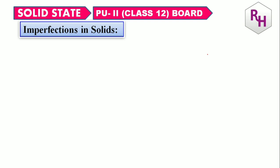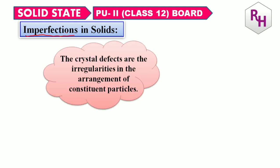Generally, although crystalline solids have short range as well as long range order in the arrangement of their constituent particles, yet crystals are not perfect — that is what we call imperfections. A solid consists of an aggregate of a large number of small crystals, and these small crystals have defects in them. This happens when the crystallization process occurs at a fast or moderate rate. Single crystals are formed when the process of crystallization is very slow, but even these crystals are not free of defects. Crystal defects are the irregularities in the arrangement of the constituent particles.